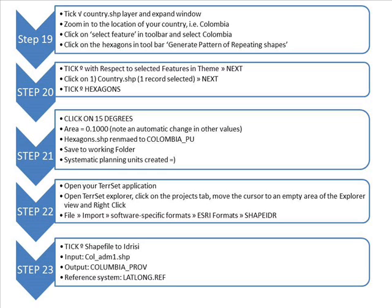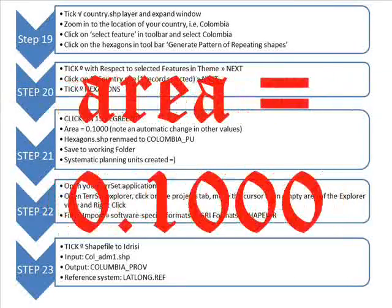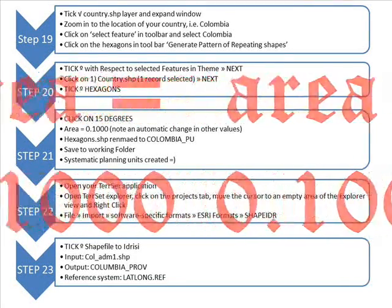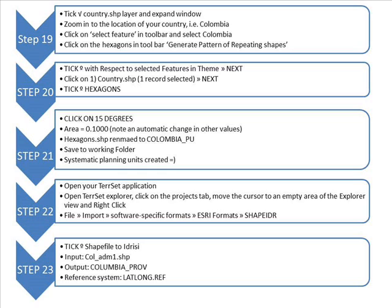Tick With Respect to Selected Features. Next click on Country Shape — one record selected. Next click Hexagon. Change the area to 0.100. Save to your working folder and rename the hexagon shapefile to Colombia PU. This creates your systematic planning units.